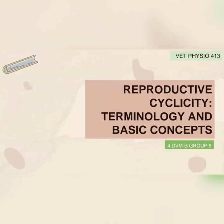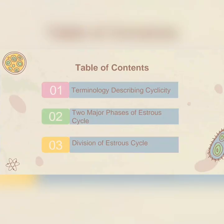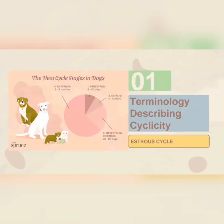Hi everyone! Today, let's talk about reproductive cyclicity, terminology, and basic concepts. For the table of contents: first, we have terminology describing cyclicity; second is the two major phases of the estrous cycle; and lastly, we have the division of the estrous cycle.